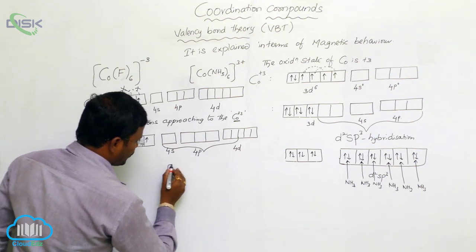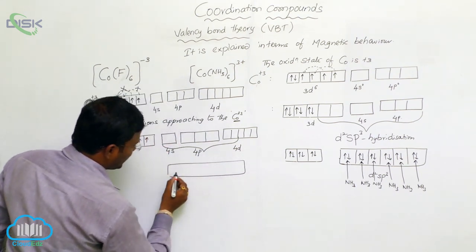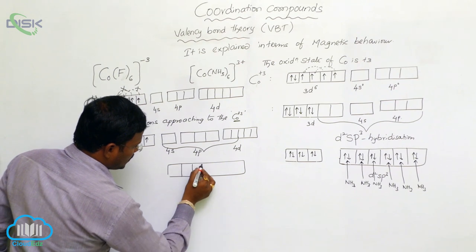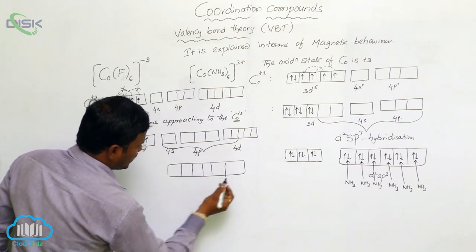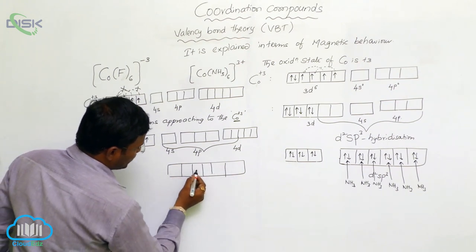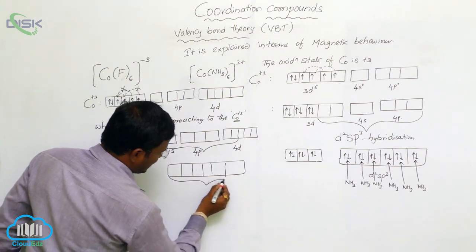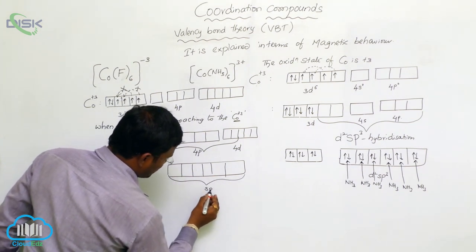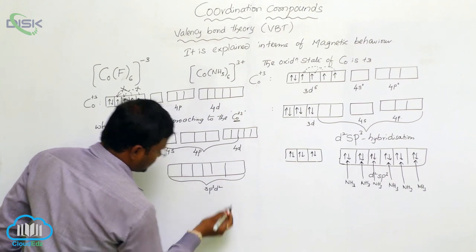So, combinedly produces how many? One s orbital, three p orbitals, two d orbitals. So, 1, 2, 3, 4, 5, 6. It is called as sp3d2 hybridization.